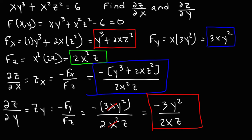That's the partial derivative of z with respect to y. That's how we use the implicit function theorem to get the answer.